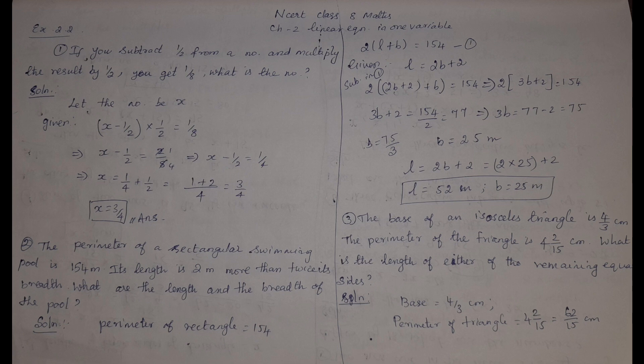Third problem: the base of an isosceles triangle is 4/3 centimetres. The perimeter of the triangle is 4 and 2/15 centimetres (i.e., 62/15 cm). What is the length of either of the remaining equal sides? In an isosceles triangle, 2 sides are equal and 1 side is the base. Let the equal sides be x.